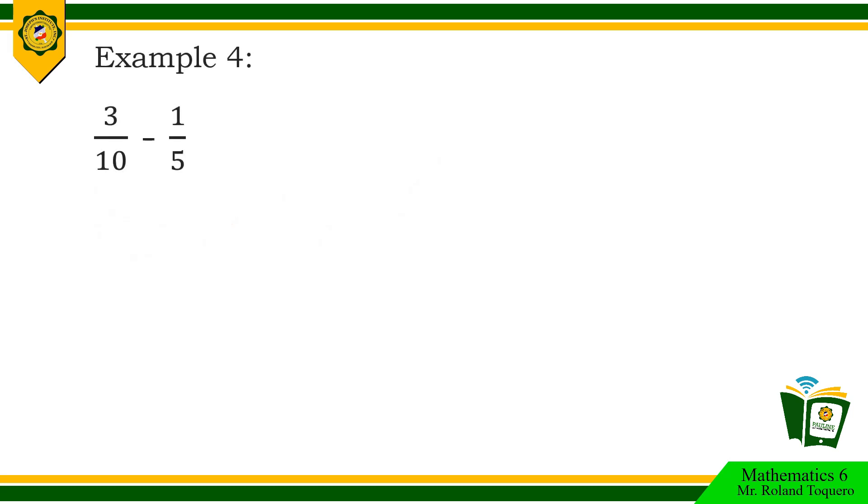3 tenths minus 1 fifth. 3 times 5 equals 15. Minus. 10 times 1 equals 10. All over. 10 times 5 equals 50. 15 minus 10 equals 5. Then copy 50.